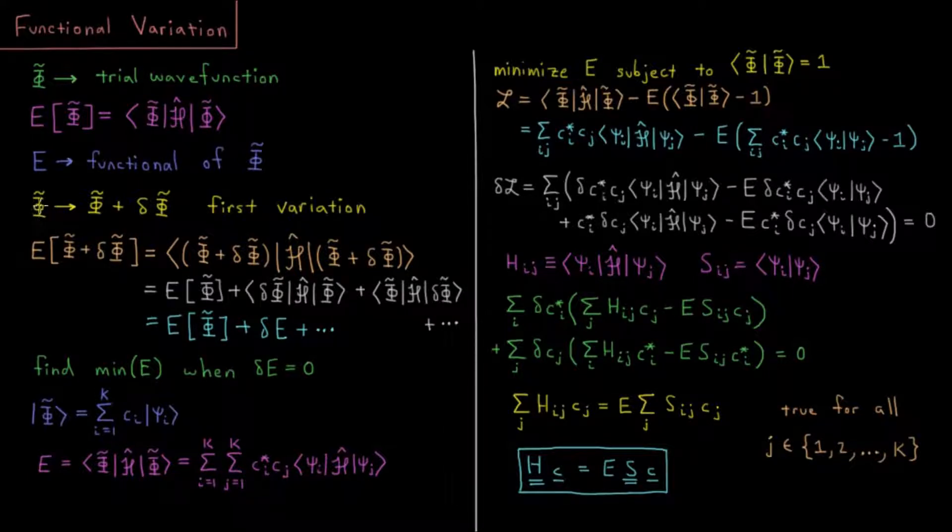Let's say that our trial wave function is going to become the trial wave function plus some small variation. You could imagine this like calculus, the first variation being similar to the first derivative, like a dx, some very small step in any particular direction in which we can alter this function.